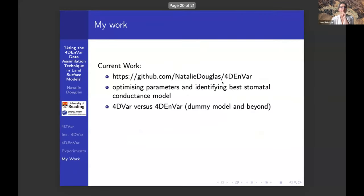I'm just about to finish. I actually have some 4D-EnVar Python code ready for anybody who wants to use that, and that's on GitHub there. The work that I'm currently doing with this is to optimize for some stomatal conductance parameters. I'm choosing that because in JULES there's a couple of stomatal conductance models. I've been testing those out, trying to use 4D-EnVar to find the parameters that do the best performance for GPP there. I'm also looking at 4D-VAR versus 4D-EnVar for dummy models to see which of the methods performs better in which areas.